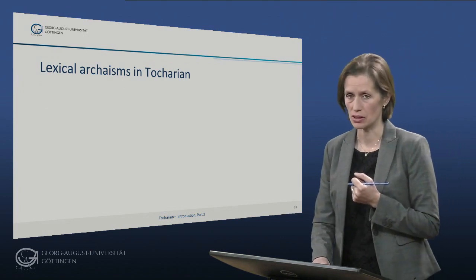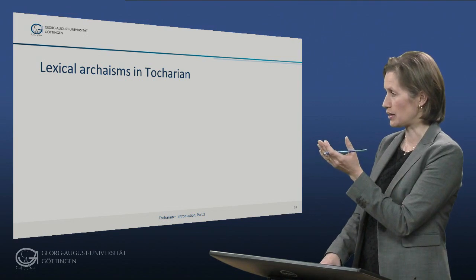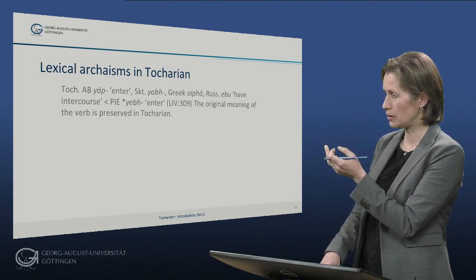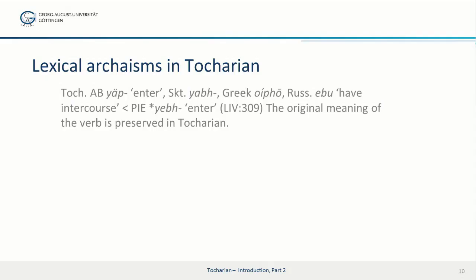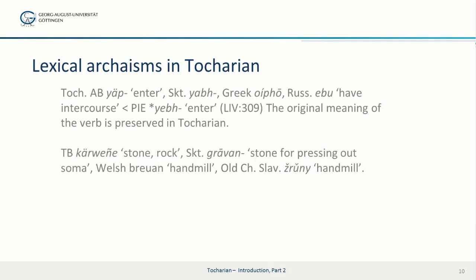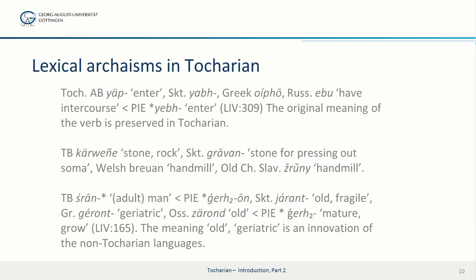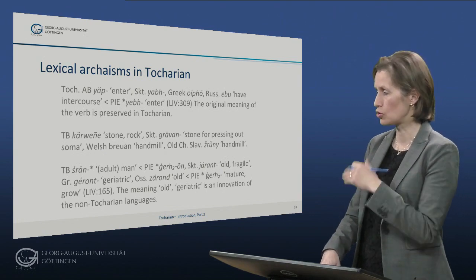Looking at lexical archaisms: we have the word 'jep/jenter/enter' which means 'enter' in Tocharian, and it has changed its meaning in all other branches. Another example is Tocharian B 'kärvene', which means stone and rock. Finally, the word 'shran' means adult man, or just man in general, whereas in other branches it means an old and fragile person. The meaning in Tocharian is more general, while in all other languages it is more specialized. Generally, languages tend to change from more general to more specific — which is why this is considered an archaism.